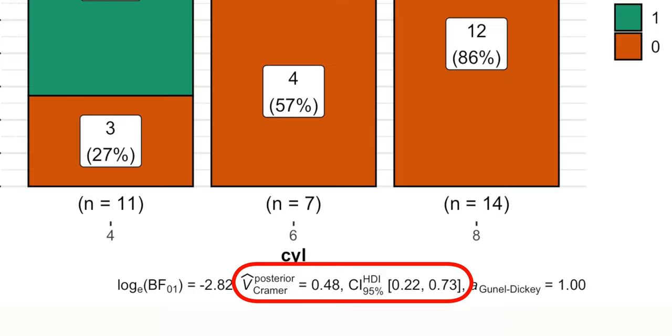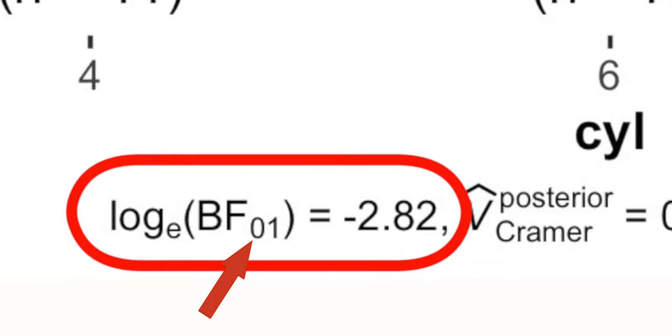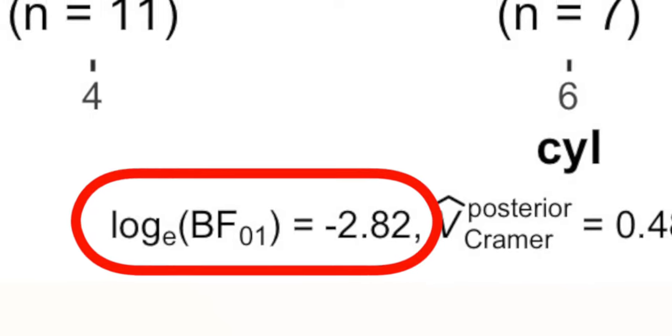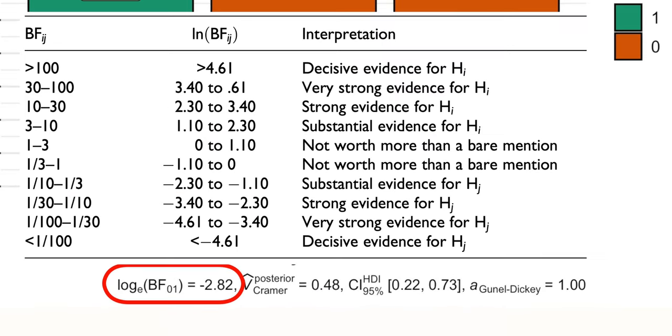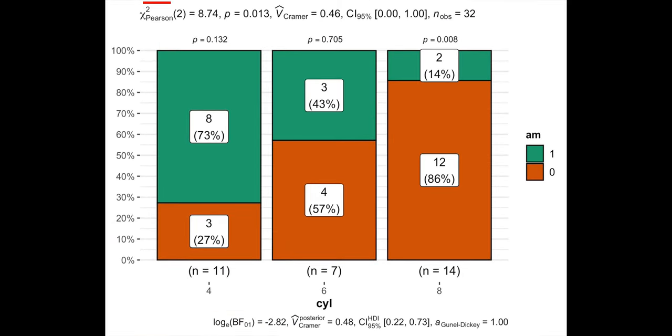If that's not enough, we can look at the Bayes factor which tests both null and alternative hypotheses at the same time. Bayes factor of 2.8 in our example indicates strong evidence for the alternative hypothesis that the relationship exists, which is in line with the frequentist statistics on the top of the plot.